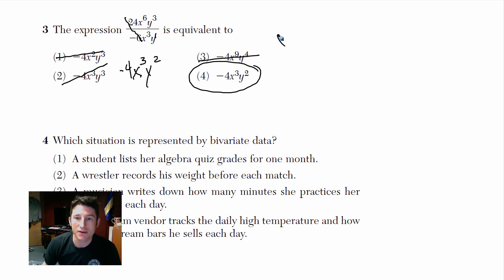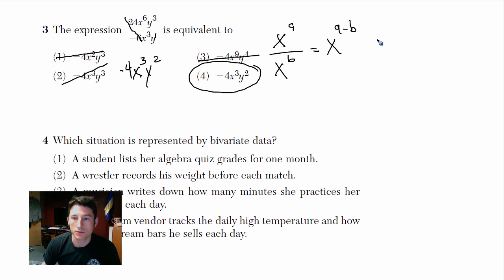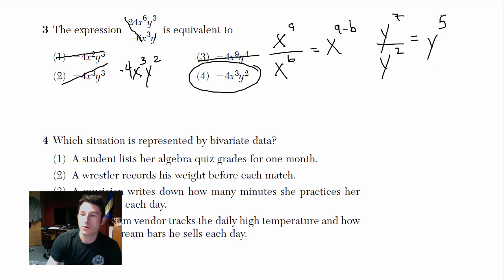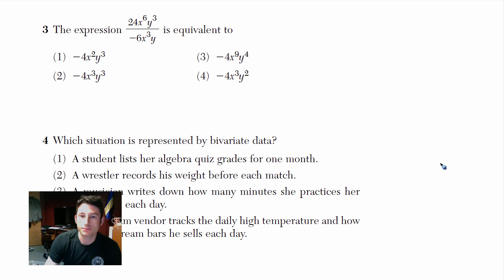Just remember: if you have x to the a divided by x to the b, it's the same as x to the (a minus b). For example, y to the 7th over y to the 2nd equals y to the 5th.